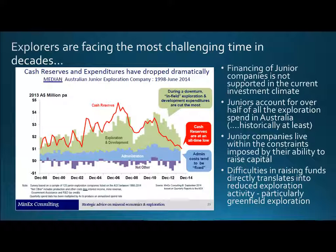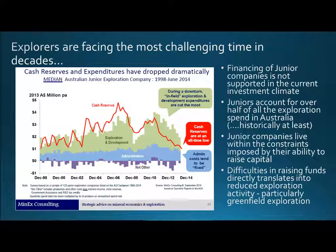This is a pretty depressing graph. It's another one prepared by Richard Schott. It kind of shows where we are as junior explorers. This red line is cash reserves on average for 125 listed junior companies here in Australia — there are about 650 of us. As you can see, it's quickly approaching our admin levels. That means, in general, we have just enough money to keep the lights on.